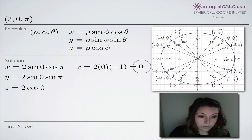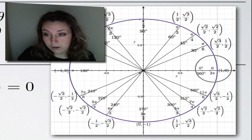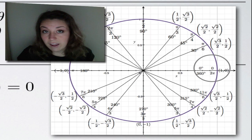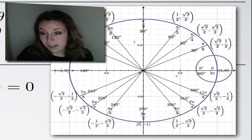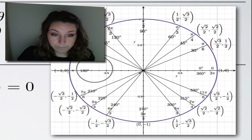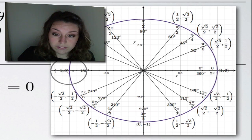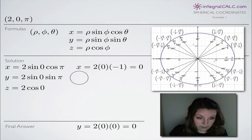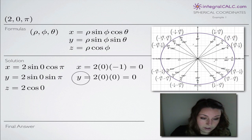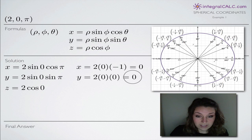Now for our y-coordinate, we're looking for sine of 0 and sine of pi. Going back to our unit circle, we're looking for the place where the angle is equal to 0, and sine of that angle is the y-coordinate there, so sine of 0 is 0. We also look for sine of pi — sine of pi is also 0. So heading back to our formula, y equals 2 times 0 times 0, which gives us 0.